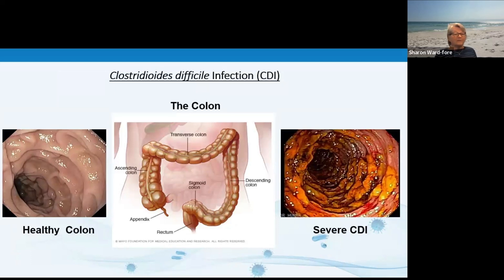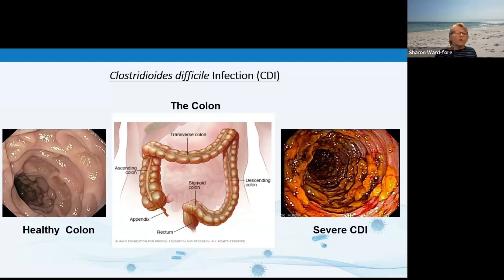Clostridioides difficile infection — CDI — is the leading cause of antibiotic- and healthcare-associated infective diarrhea in the United States. C. diff can produce toxins that attack the lining of the large intestine, and it's been increasingly found to infect the small intestine too — called C. diff enteritis. The clinical presentation varies from asymptomatic colonization to mild diarrhea to severe debilitating disease or even perforation. Symptoms can begin within five to ten days after starting an antibiotic, but can occur as soon as the first day or up to three months later. Symptoms in mild to moderate CDI include watery diarrhea three or more times a day and mild belly cramping and tenderness.